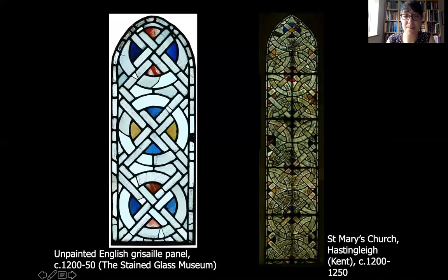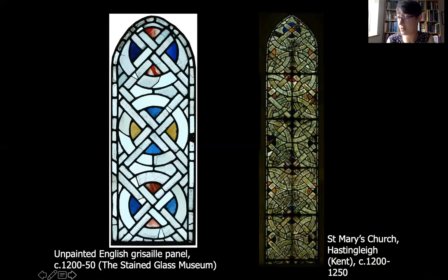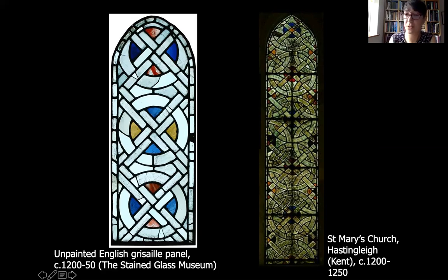This window on the left, dating to the 13th century, is one of the panels on display at the Stained Glass Museum. Not all stained glass is painted as you can see - this is a panel made of glass and lead called a grisaille panel, because it's predominantly made of white or clear glass. You can see an example next to it in the parish church at Hastingley in Kent. You can see that clear glass does corrode over time - this very old glass has browned in colour and is slightly greeny. Glass does corrode slowly over time.